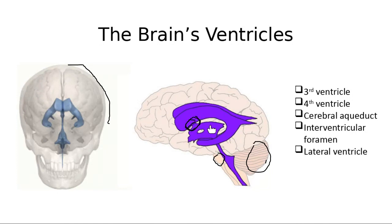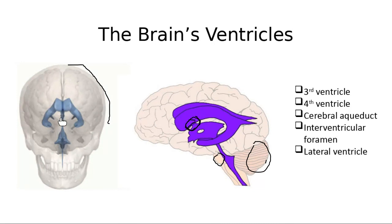Once in the third ventricle — inside the thalamus, the duck face — we go down to the fourth ventricle, which looks like a big diamond shape between the pons and the cerebellum. To get from the third ventricle into the fourth ventricle, we use a little tube called the cerebral aqueduct. The cerebral aqueduct goes from the third ventricle into the fourth ventricle.